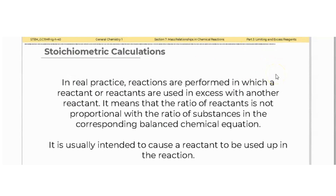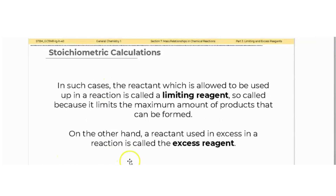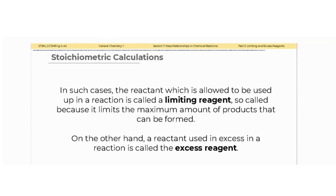In real practice, reactions are performed in which a reactant or reactants are used in excess with another reactant. This means that the ratio of reactants is not proportional to the ratio of substances in the corresponding balanced chemical equation. It is usually intended to cause a reactant to be used up in the reaction. The reactant which is allowed to be used up is called the limiting reagent, because it limits the maximum amount of products that can be formed.